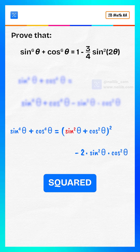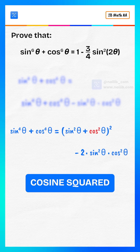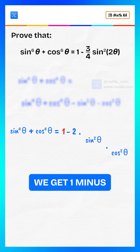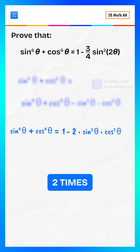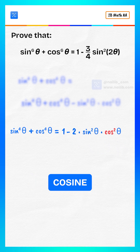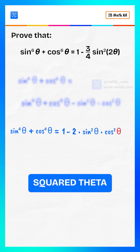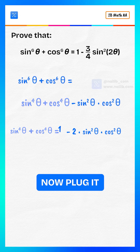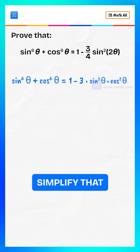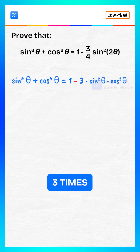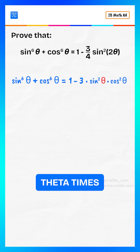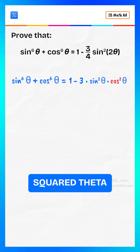Since sine squared theta plus cosine squared theta equals one, we get one minus two times sine squared theta times cosine squared theta. Plugging it back into our earlier result and simplifying, we get 1 minus 3 times sine squared theta times cosine squared theta.